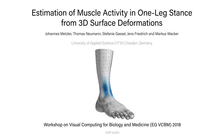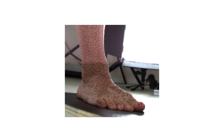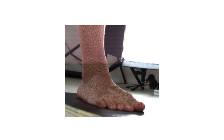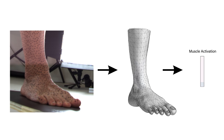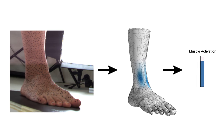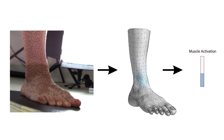While standing on one of your legs, immediately a complex biological control system is activated in order to provide a stable stance. To this end, specific muscles contract in a sophisticated sequence. Such muscle activations result in subtle skin deformation that becomes visible on its surface. Our method aims for an activation model of the involved muscles by 3D reconstruction of the surface and subsequent analysis of such subtle muscle deformations.